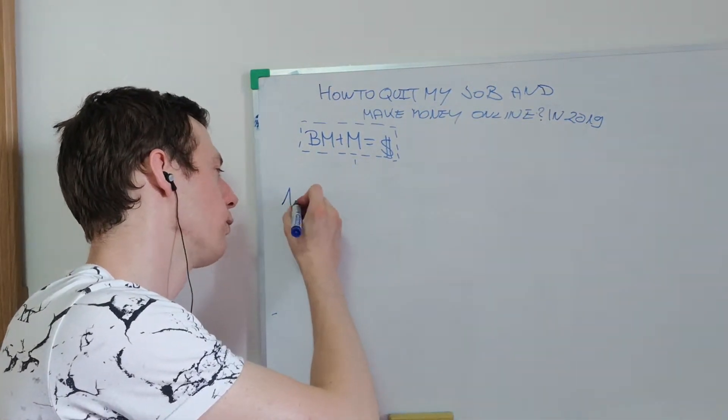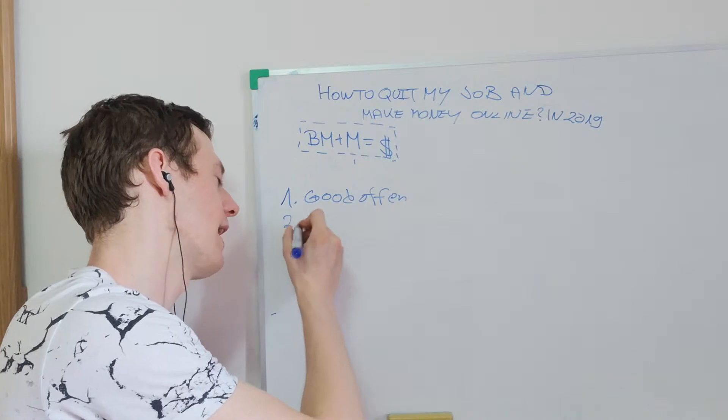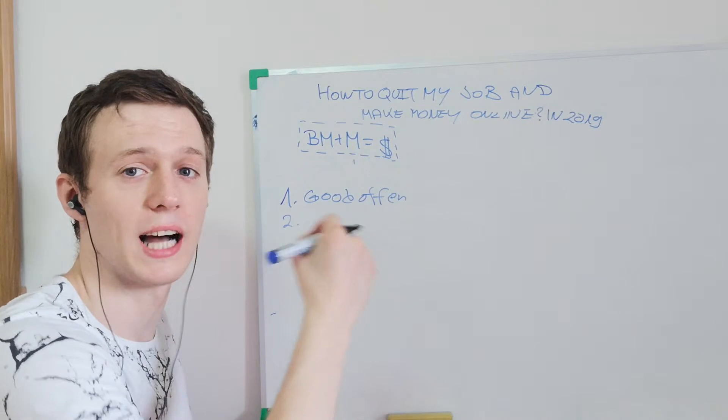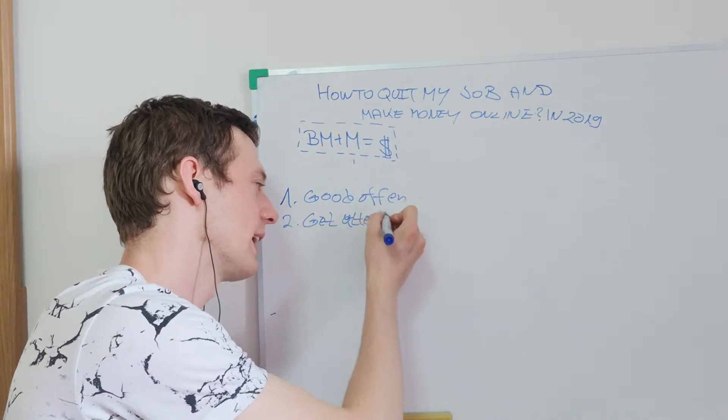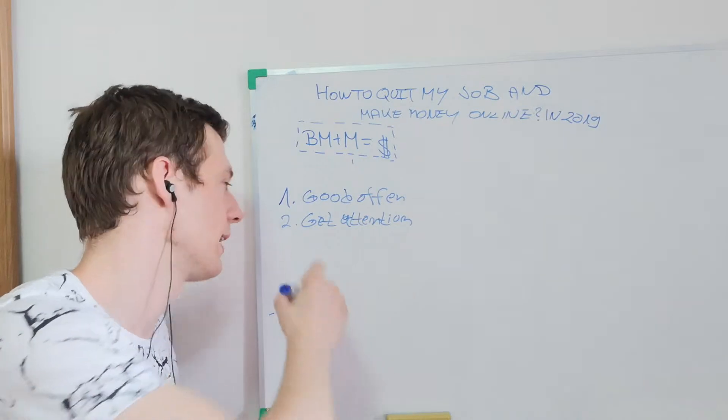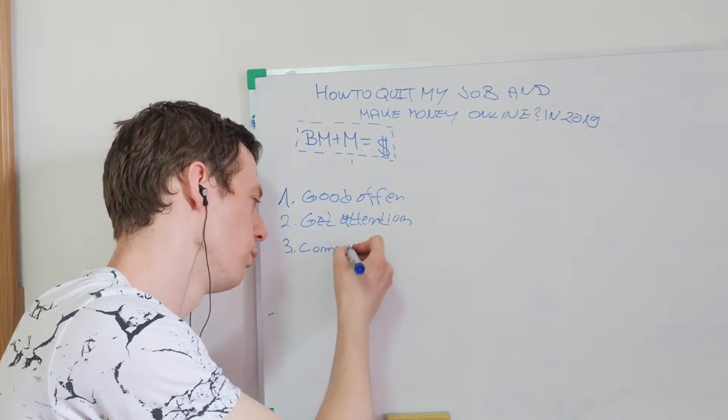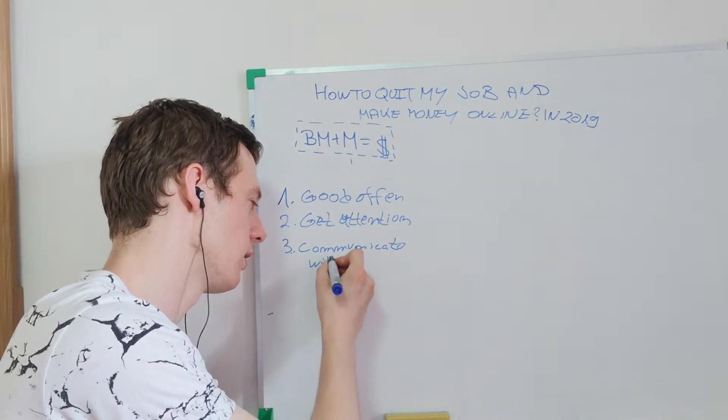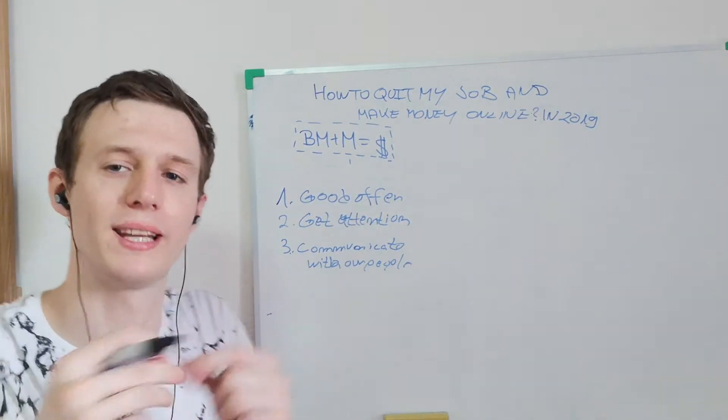Number one, we need to find a good quality product, a good offer. We need to have a good offer. We need to understand how to get attention, get visitors to our website, traffic, people coming to our website. And then we need to understand how to communicate with our people.